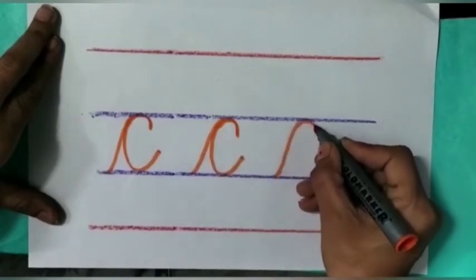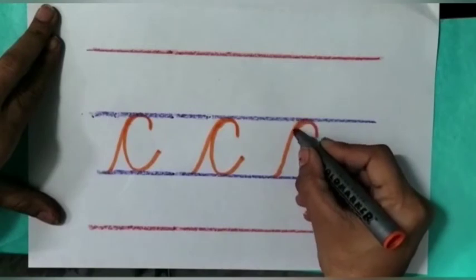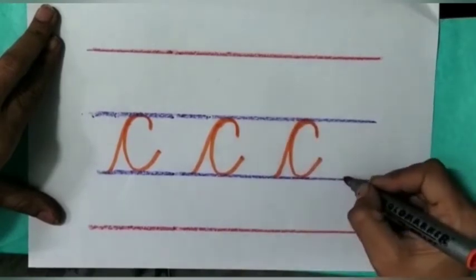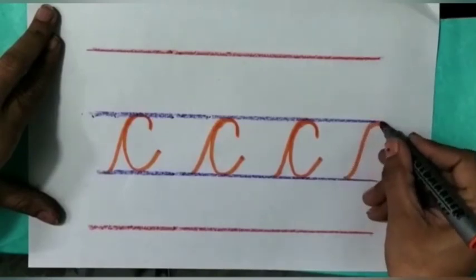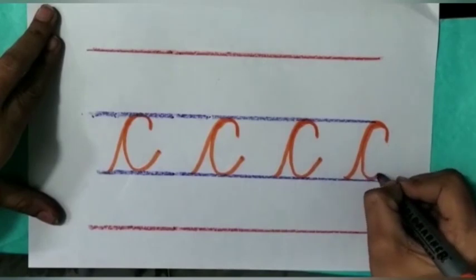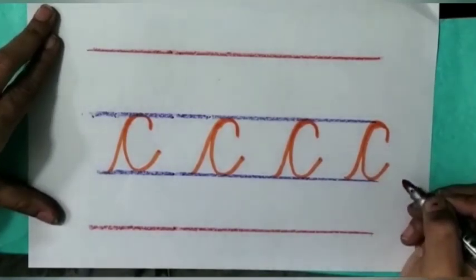Make a curve line. Go up and down. Go up and down. Go to center line. This is the letter C.